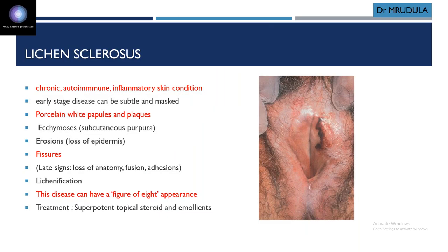Lichen sclerosis is a chronic autoimmune inflammatory skin condition. The anatomy of the vulva is not preserved — you can see burial of the clitoral hood, and the labia majora and minora cannot be demarcated clearly. Early stage signs and symptoms can be very subtle. It is usually porcelain white papules or plaques. There can be ecchymoses, erosions, fissures, lichenification, fusion of labia majora and minora, adhesions, and basically a figure-of-eight appearance.